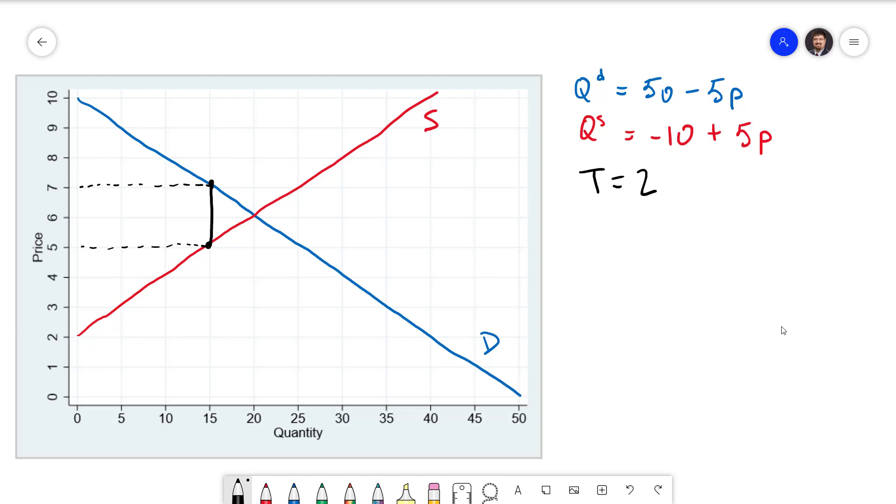Earlier we discussed the efficiency of a competitive market. We made the argument that anything that knocks the market out of equilibrium is going to make it inefficient. A tax is one of the things that will do that. When the government is trying to decide how much to tax something they're going to have to take this efficiency loss into account and weigh it against whatever they intend to do with the revenue.